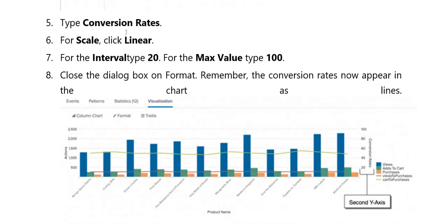Fifth, type the conversion rates. For scale, click linear. Here you have the interval type — put 20. For the maximum value, type 100. Close the dialog box and format. Remember the conversion rates will now appear on the chart as lines.